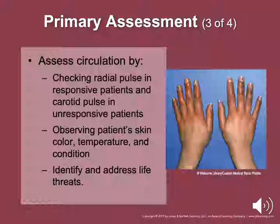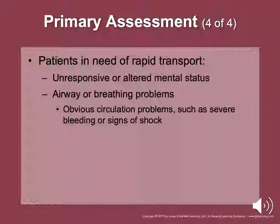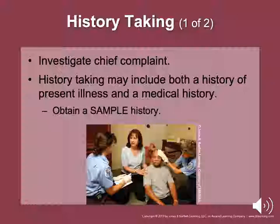For circulation, check for a radial pulse in a responsive patient and a carotid pulse in the unresponsive patient. Observe the patient's skin color, temperature, and condition, and quickly identify any life threats such as severe bleeding. Patients who should be considered in serious condition and in need of rapid transport include those who are unresponsive or have an altered mental status, airway or breathing problems, or obvious circulation problems such as severe bleeding or signs of shock. These patients need scene times of less than 10 minutes — treat them like trauma patients to get care directed quickly.